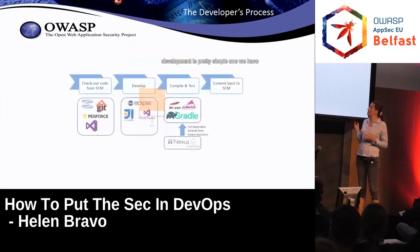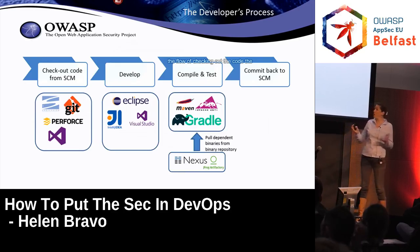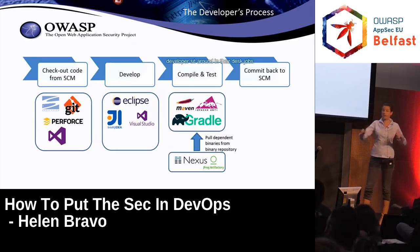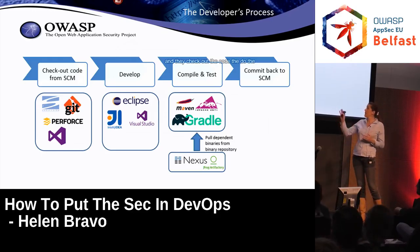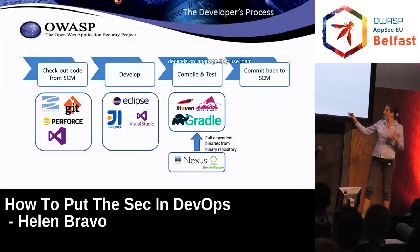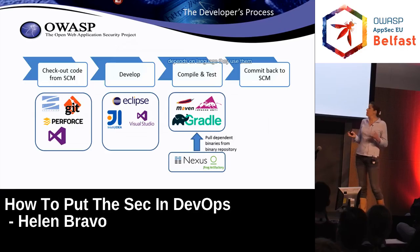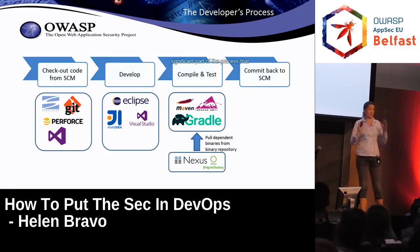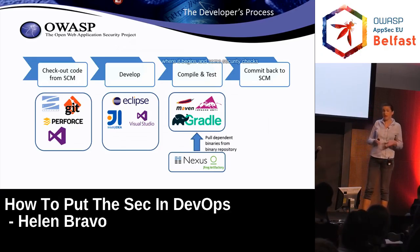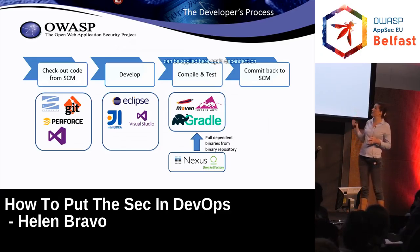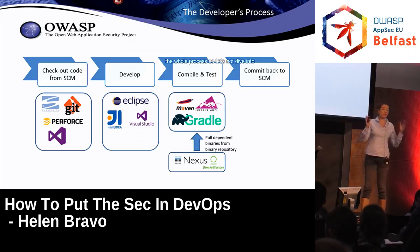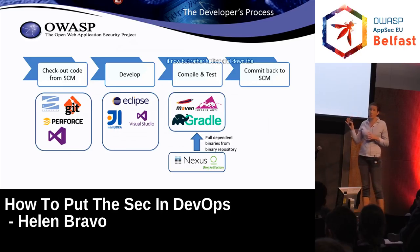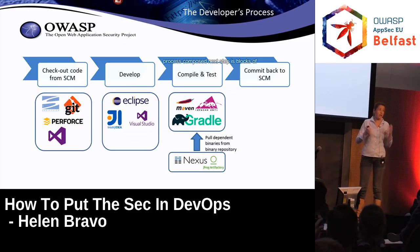Development is a pretty simple one. We have the flow of checking out the code — developers sit at their desks, they check out the code, do the development either on IDEs or without IDEs depending on the language they use, then compile and commit it back. That's a significant part of the process, that's where it begins. Some security checks can be applied here, but we'll dive into that further down when we see the whole process composed.